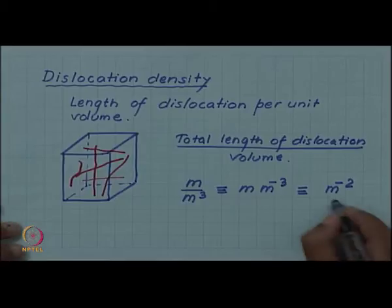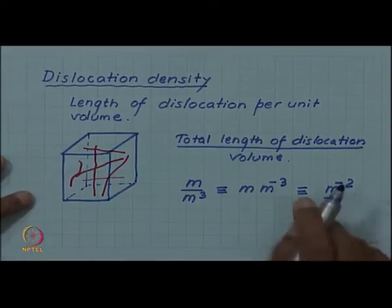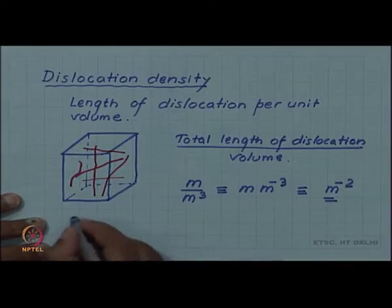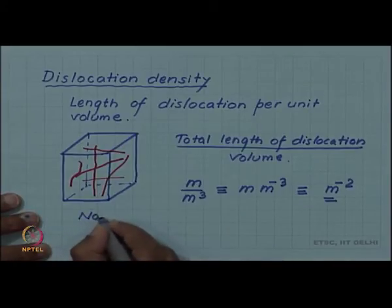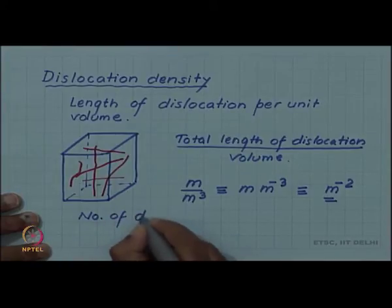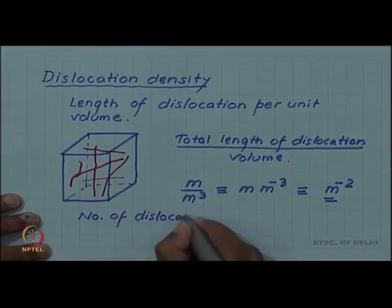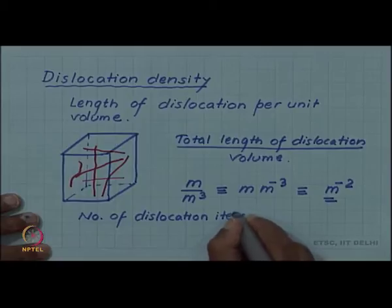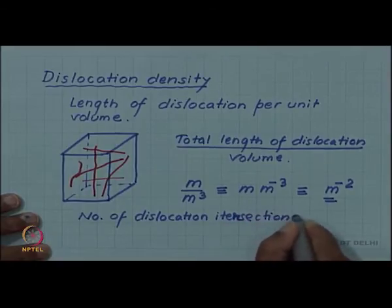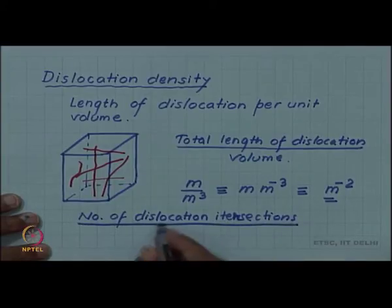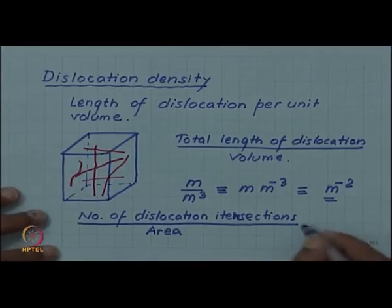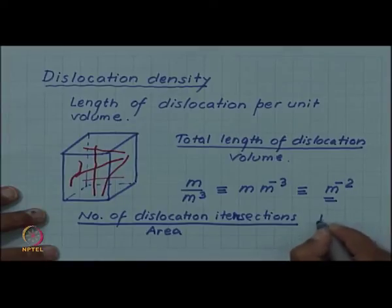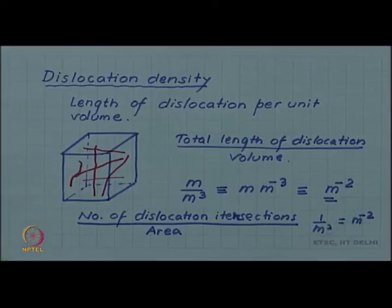But there is another interpretation of this per meter square. Another way of defining the dislocation density is number of dislocation intersections per unit area on a test surface. The number is dimensionless, so this will directly give you per meter square as the dimension.